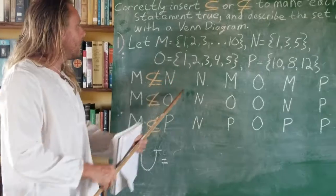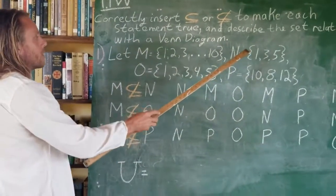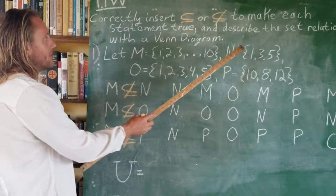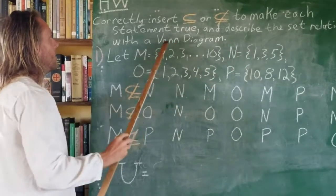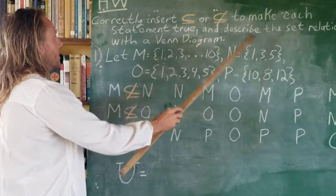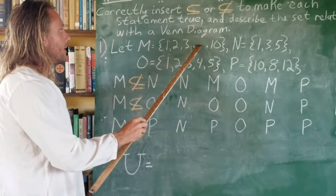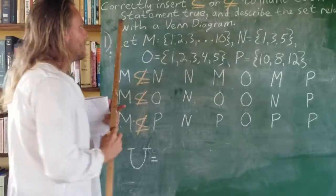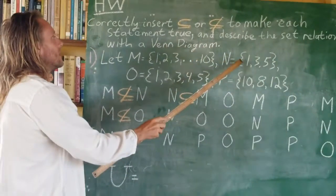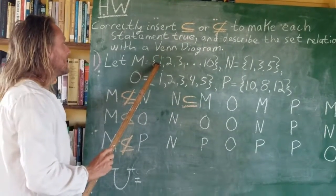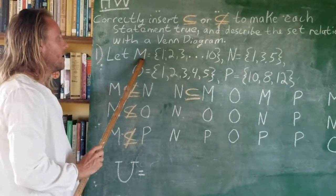Let's go on to N relations. Is N a subset of M? All the elements within N would have to be distinct elements within M. Is there a 1 in M? Yes. 3? Yes. 5? Yes — as we talked about what those ellipses fill in. So N is a subset of M, because each distinct element in N is present as a distinct element within M.